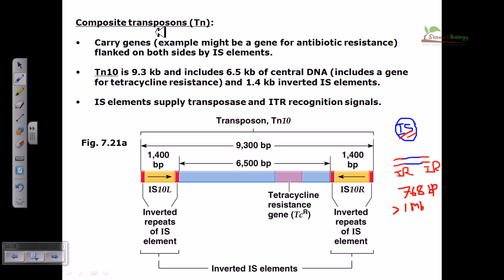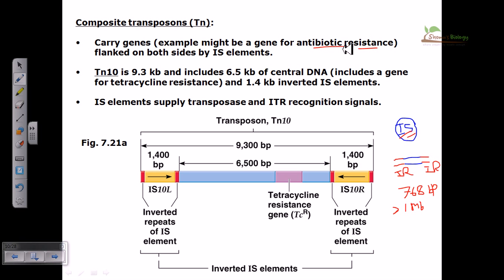If you look at composite or non-composite transposable elements, they vary from IS elements because IS elements are pretty simple, but composite and non-composite transposons are more complicated. Both types of transposons are made up of more than one insertion sequence, and they can also carry a few different types of genes — sometimes genes which give the bacterial cell an evolutionary advantage, like antibiotic resistance genes. This kind of gene can also be carried by composite or non-composite transposons.